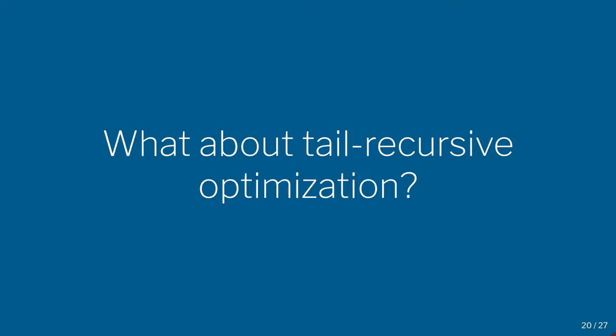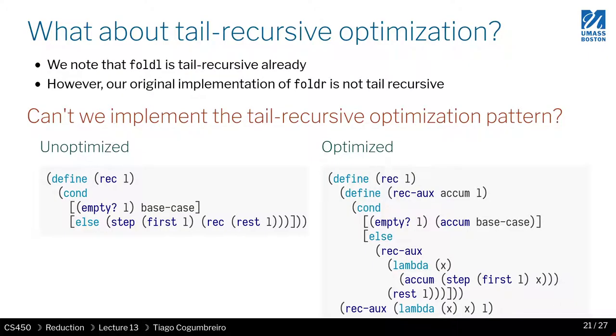Now I would like us to go back and think about fold right, the first example that we looked at. I want us to recall that that version is not tail call optimized.